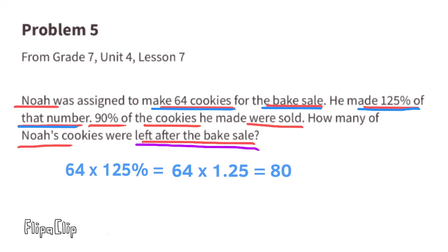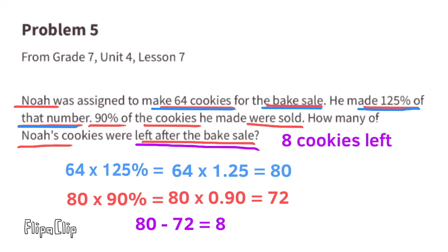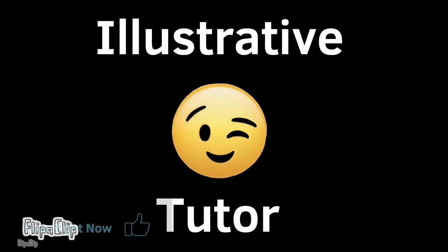90% of those 80 cookies were sold, so we write 80 times 0.9, which equals 72. They sold 72 cookies out of the 80 he baked. 80 minus 72 equals 8 — that's the number of cookies left over after the bake sale.